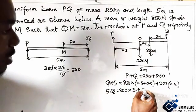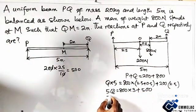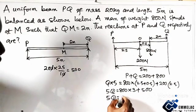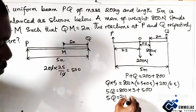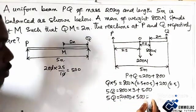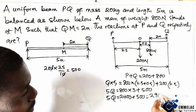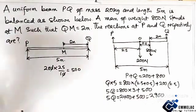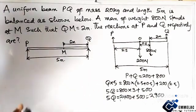So here we have 5Q will now give us 2,400 plus 500, this will give us 2,900.